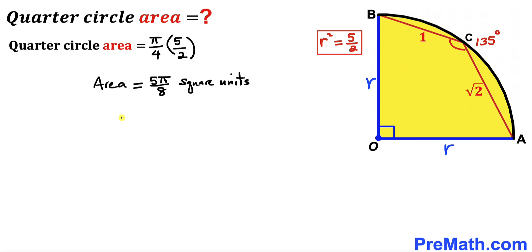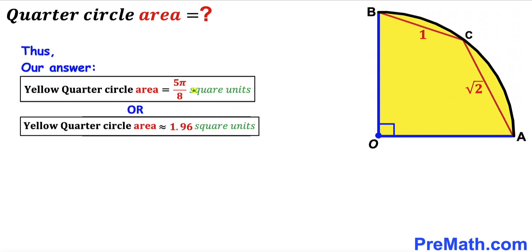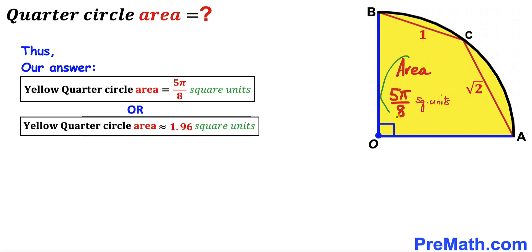In decimal form, the area of this quarter circle is approximately 1.96 square units. So after all calculations, the area of the yellow quarter circle is 5π/8 square units, or approximately 1.96 square units. Thanks for watching and please subscribe to my channel for more exciting videos.